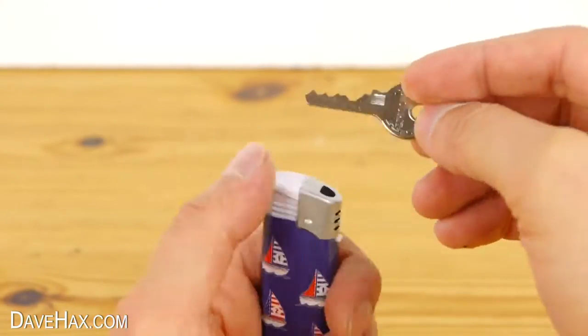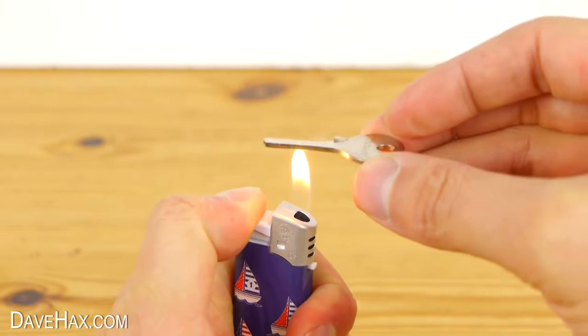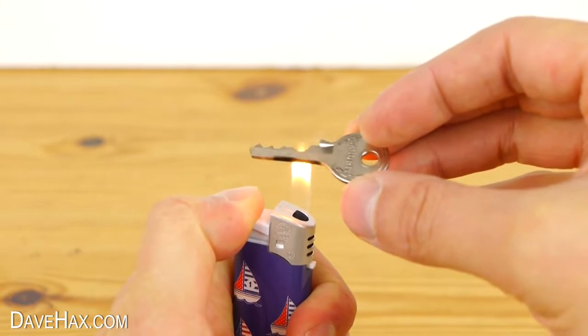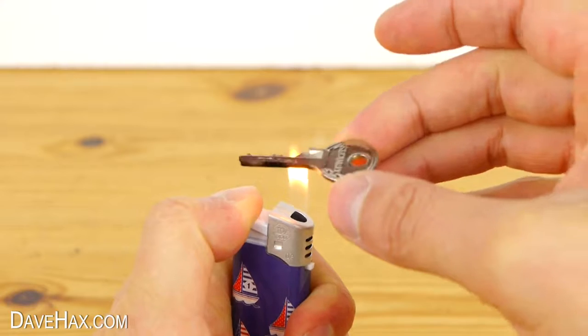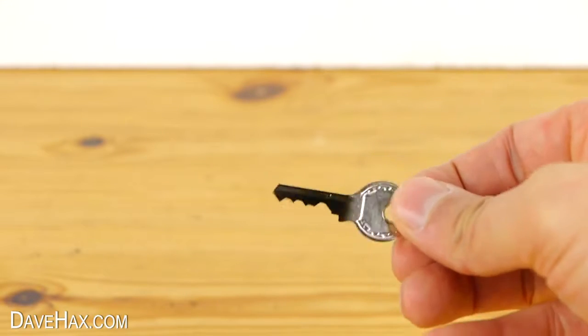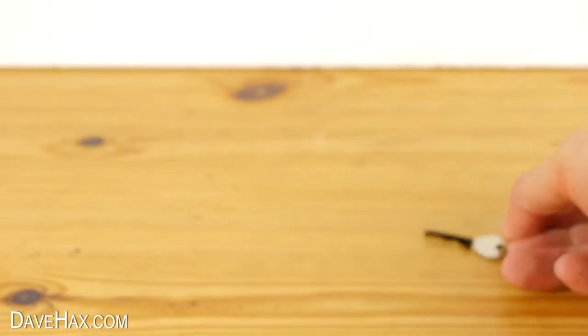Start by holding the original key over a flame. If you're worried about burning your fingers, you can hold it with a pair of pliers. When it's got a nice black coating like this, place it down somewhere safe to cool.